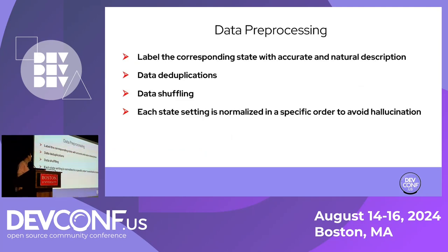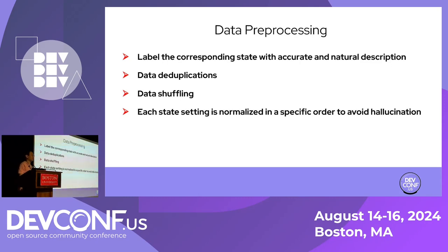Here I'll talk about the workflow for data pre-processing, training, and evaluation. I will label the corresponding state with accurate and natural descriptions first. Then I'll do data deduplication to avoid model overfitting, and data shuffling before training so the model can generalize better on random user inputs. Each state setting is normalized in a specific order to avoid hallucinations. The properties and settings appearing in the state are well sorted according to some metrics, and as a result we can avoid hallucinations during evaluation.